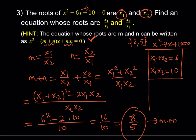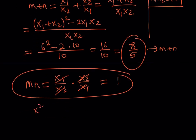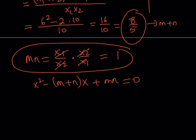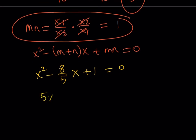Now I have m plus n equals 8 over 5 and mn equals 1. Using the formula for the equation whose roots are m and n, I substitute m plus n with 8 over 5 and mn with 1. If you don't like the fraction, multiply everything by 5 to get a nicer version. That is the answer.